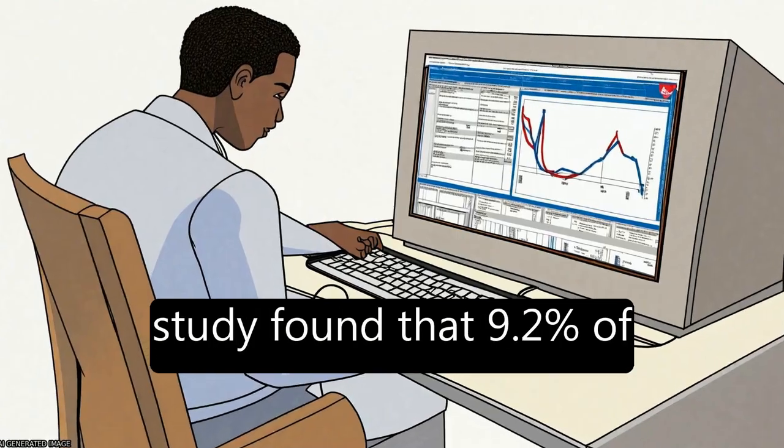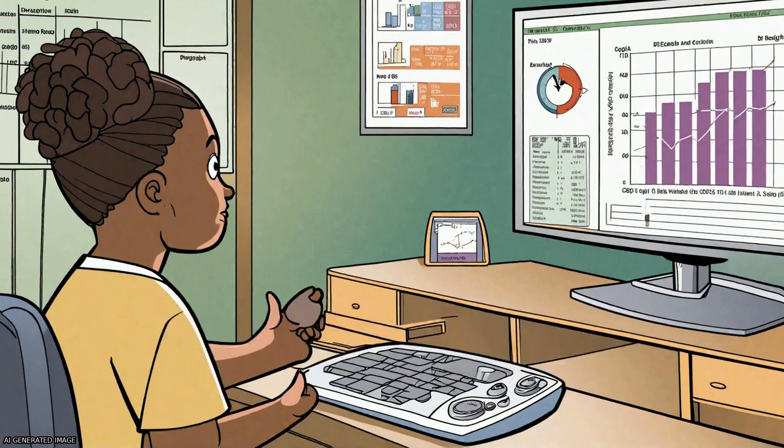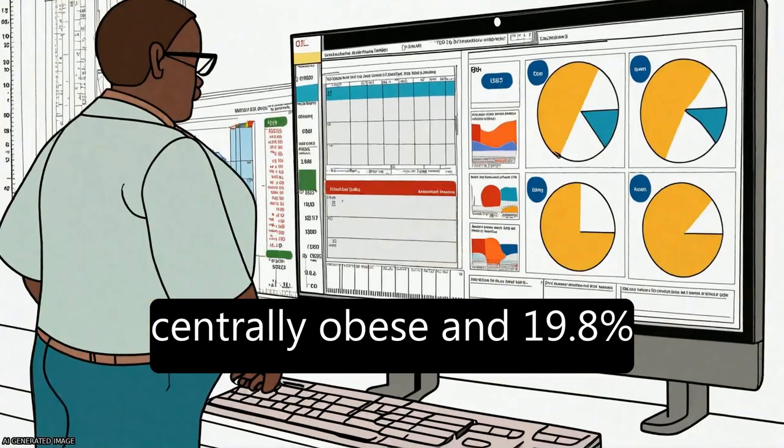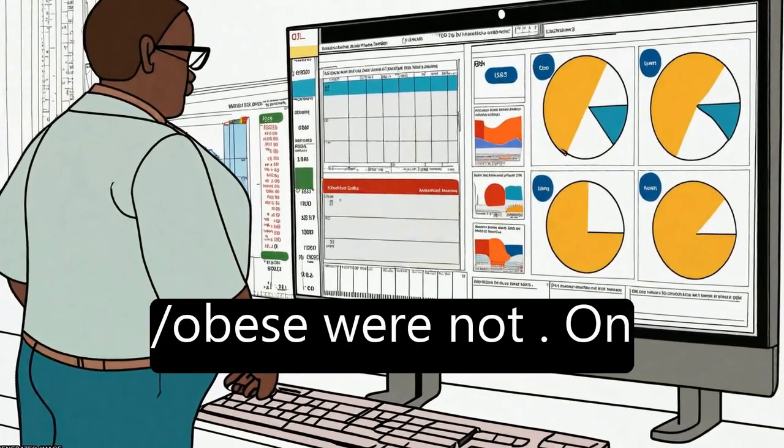The study found that 9.2% of the children in the normal weight group were centrally obese and 19.8% among the overweight obese were not.